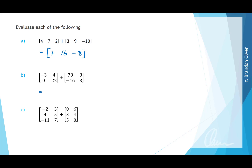For part B, both matrices are 2 by 2, so addition is defined. We add corresponding entries: negative 3 plus 78 is 75; 4 plus 8 is 12; 0 plus negative 46 is negative 46; and 22 plus 3 is 25. For part C, both are 3 by 2 matrices. Adding entries: negative 2 plus 0 is negative 2; 3 plus 6 is 9; 4 plus 3 is 7; 5 plus 4 is 9; negative 11 plus 5 is negative 6; and 7 plus 0 is 7.